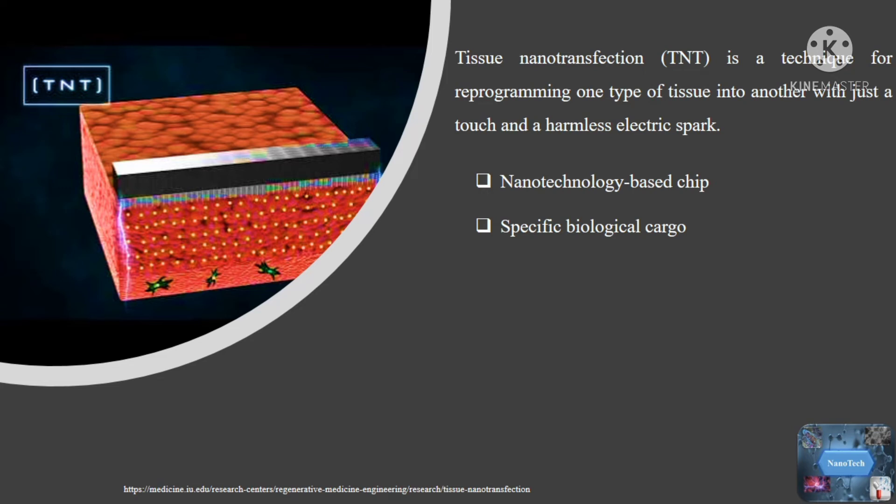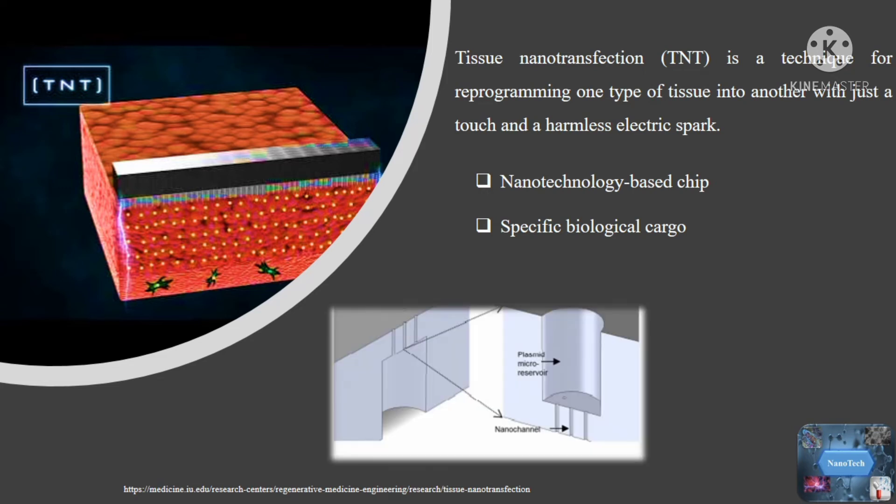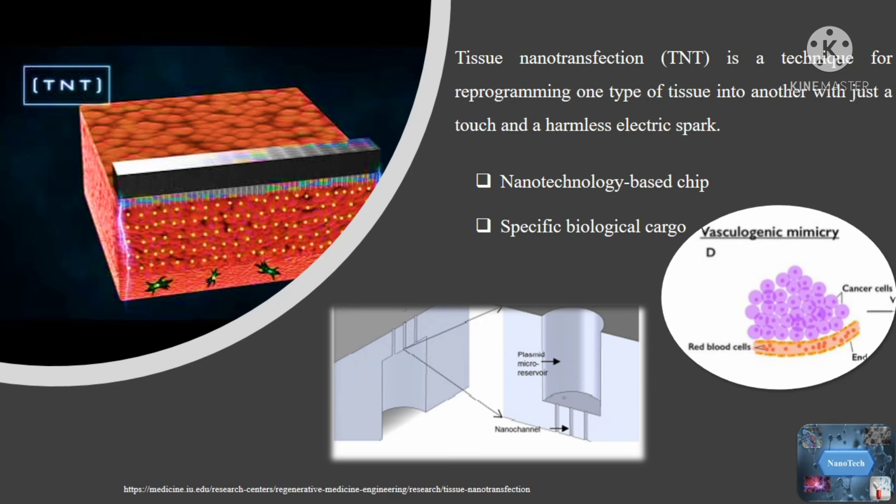Tissue nanotransfection does not require any laboratory procedures and can be done right at the patient's bedside. In addition, the process is non-invasive. That is, it takes less than a second for the nanochip hardware to make contact with the skin and transport cargo to skin cells, causing skin cells to become vasculogenic cells.